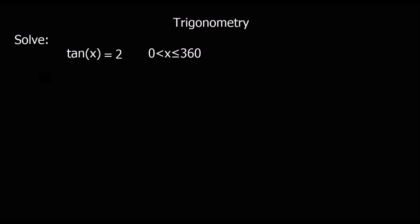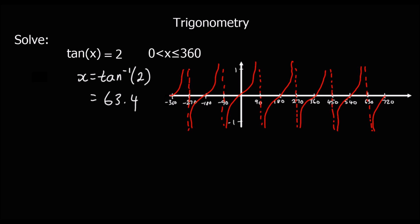Now let's look at a tan question. Again the first step is the same: shift tan 2 gives us a first answer of 63.4 degrees. The graph of tan is a bit different but actually easier, because tan repeats every 180 degrees. So we add 180 on: 63.4 is the first answer, adding 180 gives 243.4. We keep adding or subtracting 180 to generate the infinite number of answers.